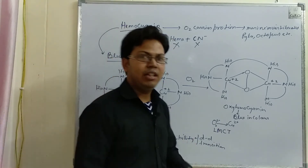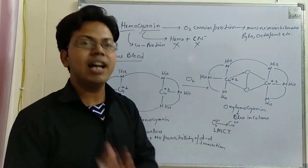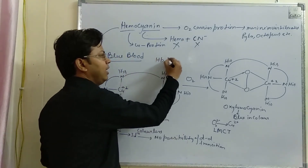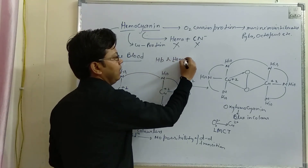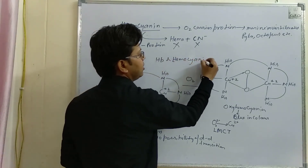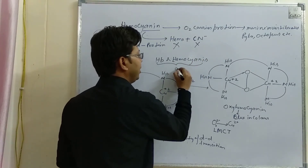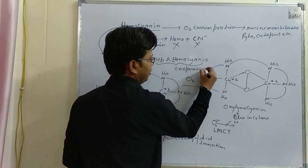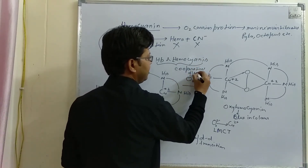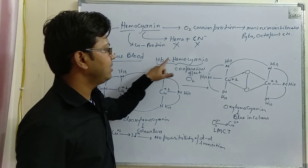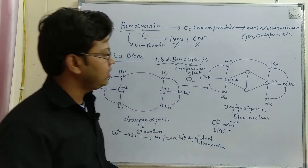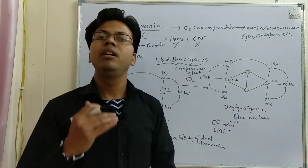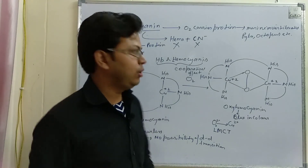The major similarity between hemocyanin and hemoglobin is that both show the cooperative effect. That is, in both hemoglobin and hemocyanin, oxygen binding is cooperative in nature — the bonding of one oxygen molecule initiates the bonding of another oxygen molecule with the metal.